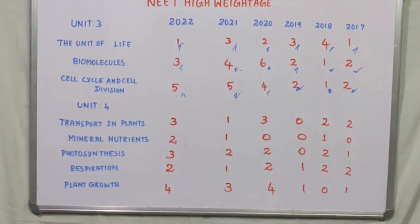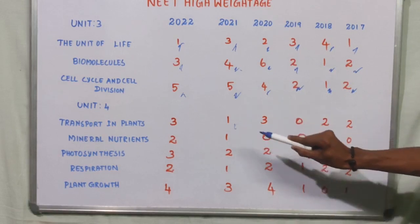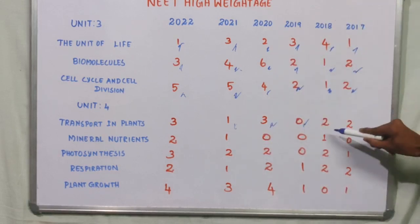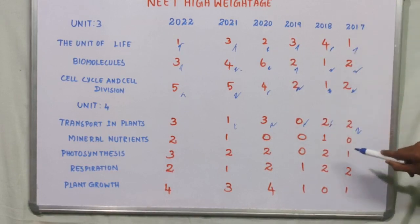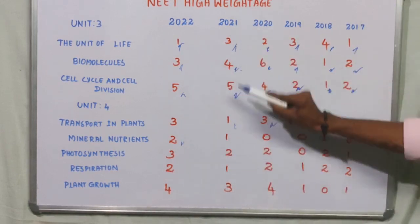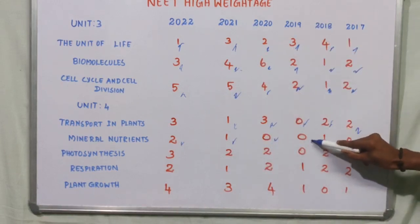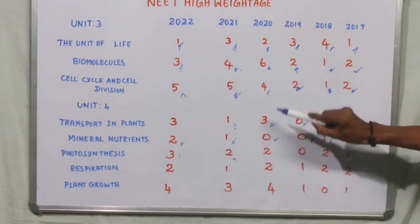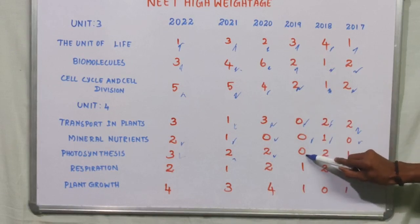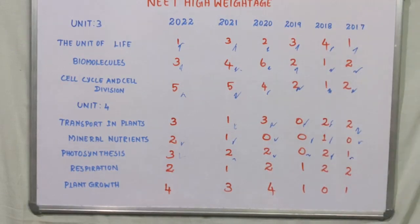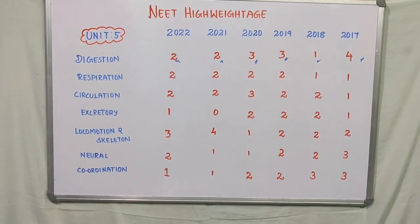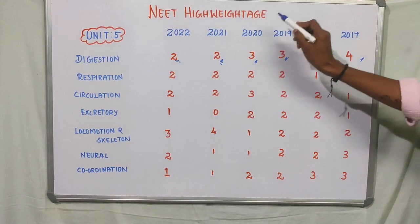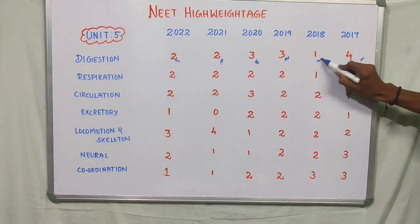Unit 4: Plant Physiology. Transport in Plants: 2022 had 3 questions, 2020 had 3 questions, 2019 had 0, 2018 had 2 questions, and 2017 had 2 questions. Mineral Nutrition: 2022 had 2 questions, 2021 had 1 question, 2020 had 0, 2019 had 0, 2018 had 1 question, and 2017 had 0. Photosynthesis: 2022 had 2 questions, 2021 had 2 questions, 2020 had 2 questions, 2019 had 3 questions, 2018 had 1 question, and 2017 had 4 questions.